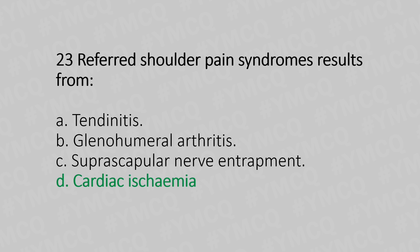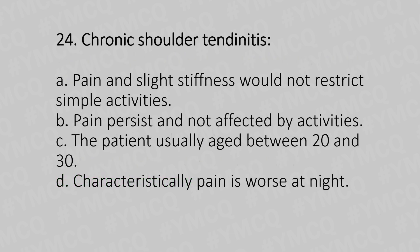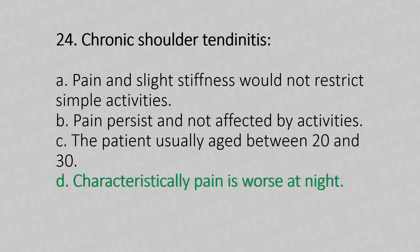Now let's move to question number 24. Chronic shoulder tendinitis. Option A, pain and slight stiffness would not restrict simple activities. Option B, pain persists and is not affected by activities. Option C, the patient is usually aged between 20 to 30. Option D, characteristically pain is worse at night. And the answer is Option D, characteristically pain is worse at night.